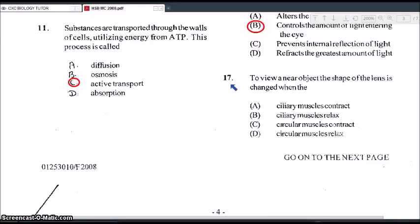Okay, question 17. To view a near object, the shape of the lens is changed when the A ciliary muscles contract, B ciliary muscles relax, C circular muscles contract, or D circular muscles relax. Now we're talking about the shape of the lens. And you should, by process of elimination, you can rule out the last two. Because there are no circular muscles that would alter the shape of the lens. So that's out of the question. You find circular muscles in the iris. So you're looking between A and B. So when the eye is focusing on a near object, the lens is actually going to get fatter. So the ciliary muscles are going to contract. So that allows the lens to get fatter and focus on that near object.